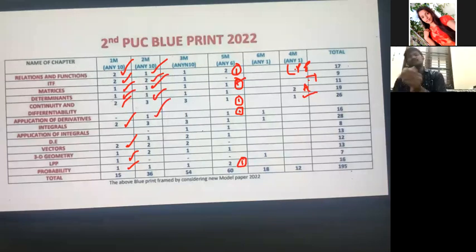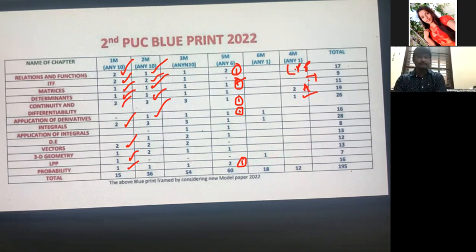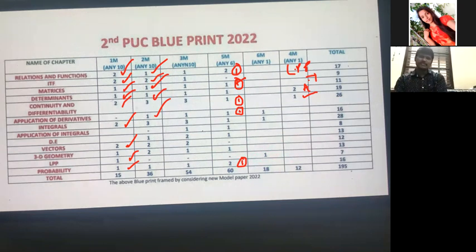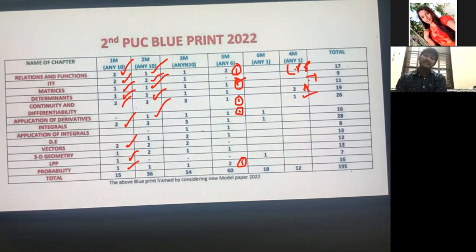For Integrals two-mark questions, expect: one question from the UV formula, one question from definite integrals such as ∫₁² log x / x dx or ∫₂³ cos x / (1 + sin²x) dx, and one question from eˣ type integrals — eˣ(sec x + tan x), eˣ(1 + sin x)/cos x — the compulsory eˣ[f(x) + f'(x)] pattern. Go through the textbook — today, tomorrow, day after tomorrow, just review the textbook or model questions.